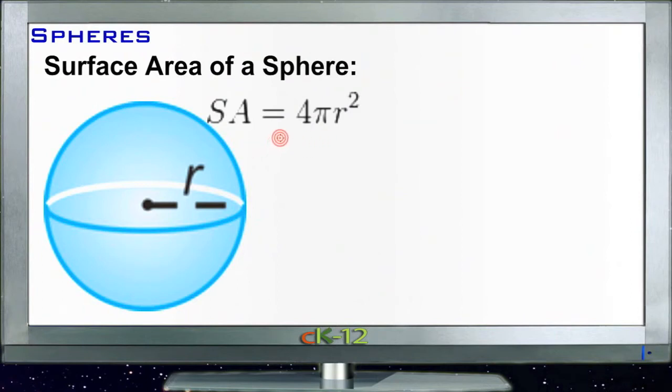Surface area of a sphere is 4 times pi times the radius squared. All you need to know is the distance from the center of your sphere out to the outside edge, and that's your radius. Then multiply that by itself, then times pi, and then times 4.